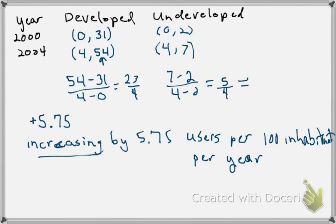We could do the same thing for the developing world. So between 2000 and 2004 the number of internet users was increasing by 1.25 users per 100 inhabitants per year.